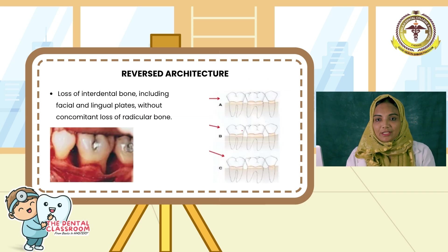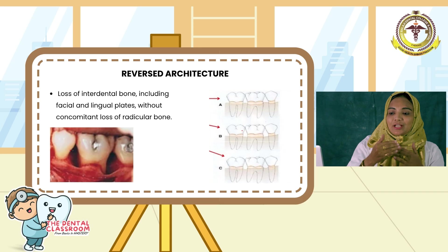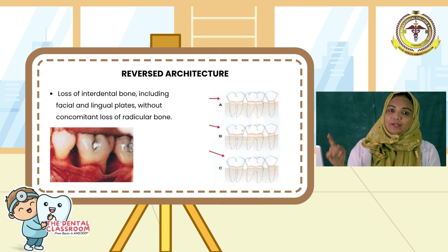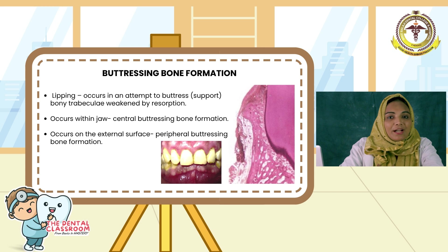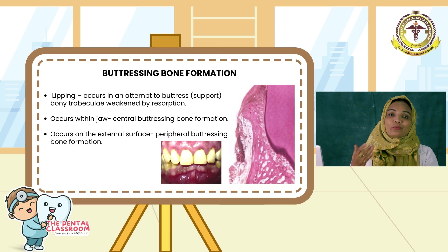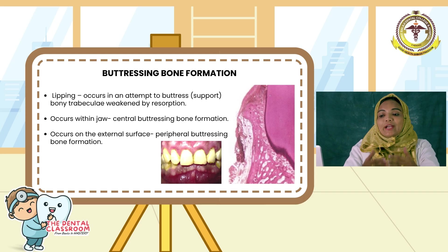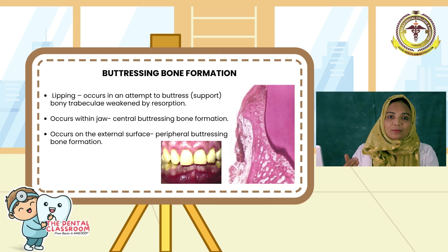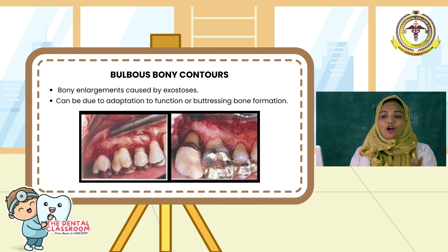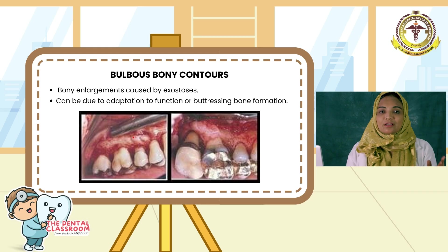Next is reversed architecture: it is the reversion of normal osseous architecture. There will be loss of interdental bone including the facial and lingual plates without concomitant loss of radicular bone. Next is buttressing bone formation, also called lipping. It occurs in an attempt to buttress — to strengthen or support the bony trabeculae that are weakened by resorption. When it occurs within the jaw, it is central buttressing bone formation. When it occurs on the external surface, it is peripheral buttressing bone formation. Next, bulbous bony contours: they are bony enlargements caused either by exostosis or by buttressing bone formation.